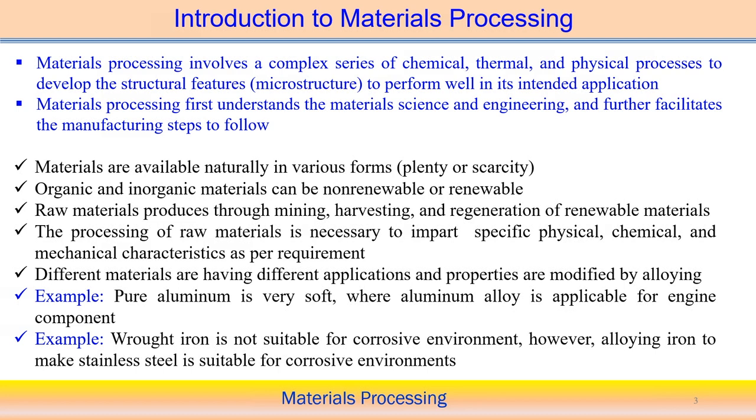Steel has high corrosion resistance. Although we are making steel from wrought iron, wrought iron is very corrosive, but when you convert it to steel, steel has corrosion-resistant properties. That is why the application of steel is in different areas — if we need performance in a corrosive environment, we need to convert from wrought iron to steel. These are the ways we can impart physical properties to raw materials to make them usable for a particular application.